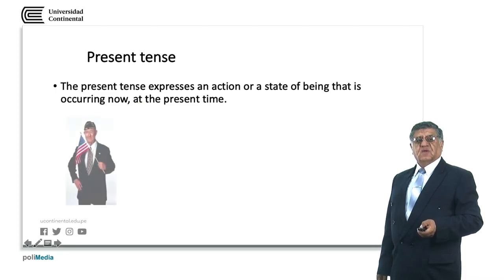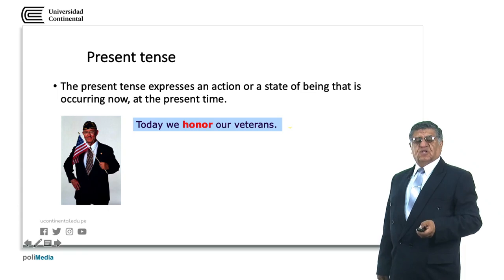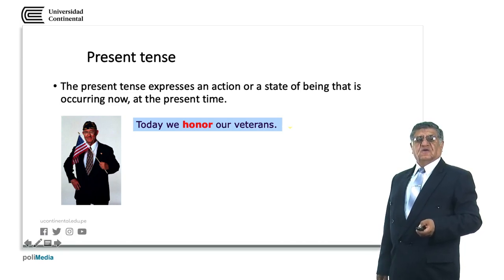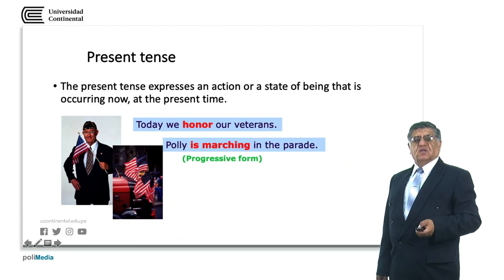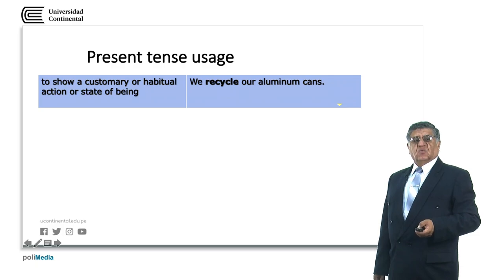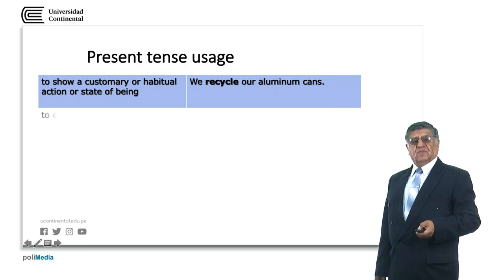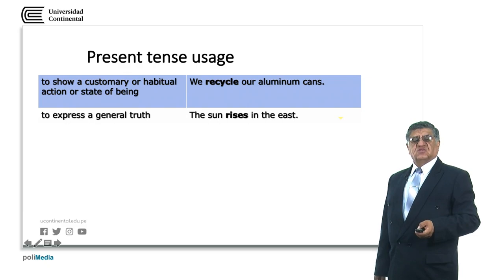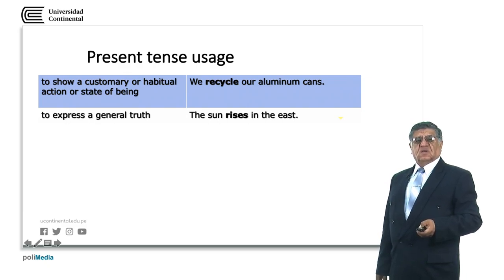In the present tense, we can express actions happening at the moment we are talking, or actions that regularly or normally happen no matter what. For example: today we honor our veterans; Polly is marching in the parade — the progressive form. The present tense is also used to show a customary or habitual action: we sleep at night, we recycle our aluminum cans. To express a general truth: the sun rises in the east.